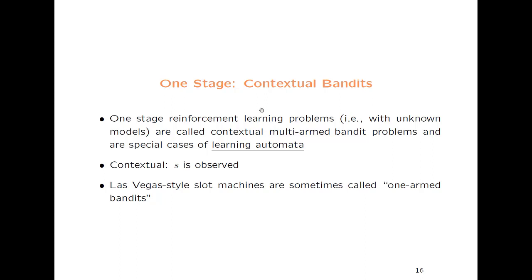Even this simple example has been studied a lot. Two fields concerned with this situation are contextual multi-armed bandit problems and learning automata. In both cases the probabilities are not known but samples are generated, making it more like reinforcement learning — but it's a one-stage problem. It's 'contextual' because s is observed. The name 'multi-armed bandit' comes from Las Vegas-style slot machines: if you have a machine with several arms to pull, with different probabilities of winning for different arms, it becomes very close to this problem.